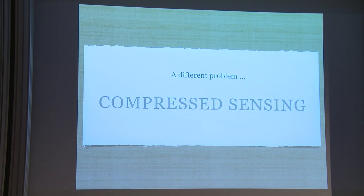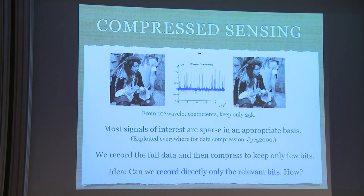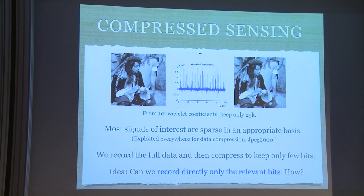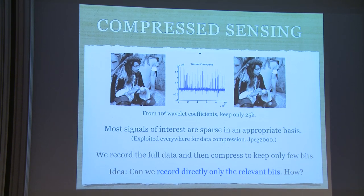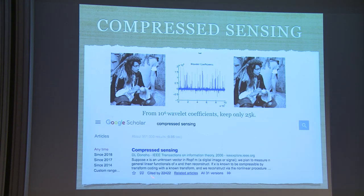Compressed sensing is the cute idea that when you store pictures in a computer you store them compressed. Classically, all the pixels are taken by the camera and then compressed. The idea of compressed sensing is to do the compression at the moment of measurement. If we can compress to 1% of the size, do we have to go through taking the full picture? Or can we never go through the full picture, only reconstructing it at the end if we really want to look at it?